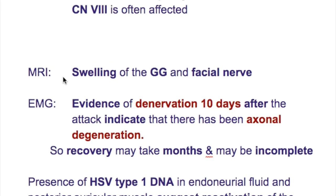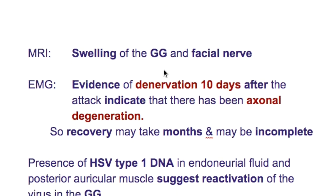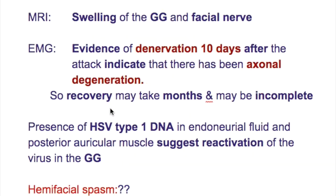What do you see on MRI in Ramsay-Hunt syndrome? Swelling of the geniculate ganglion and facial nerve. And what's the finding on EMG? Evidence of denervation 10 days after the attack indicates axonal degeneration. If there is axonal degeneration, the recovery may take months and may be incomplete.